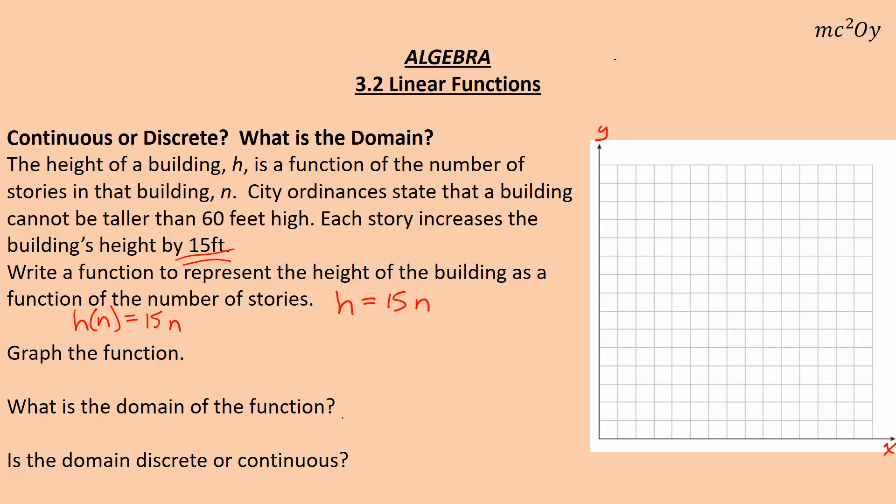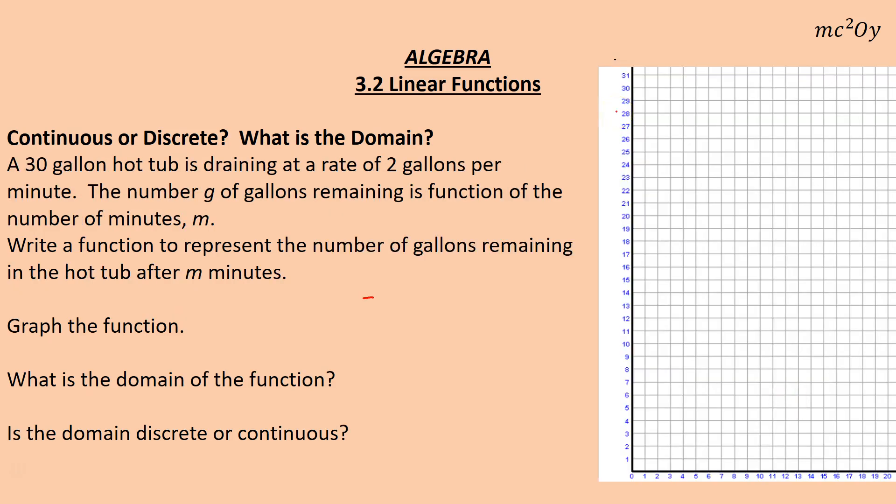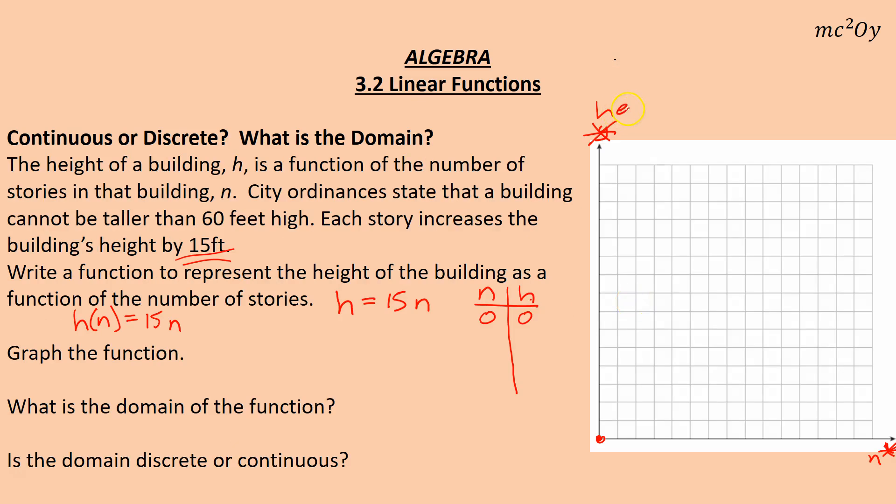Now graph the function. Well, that just means if n is zero, so I could start making a table. I could say, okay, well, my input is n, my output is h. h, the height depends upon my number of stories. So I could have zero stories, but that would just give me a height of zero. That would be kind of a boring building. And I guess I should actually change up. I should not call this y, I should call it h, and I should not call this x, I should call it n. So this is the height of the building, height. And number of stories.